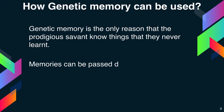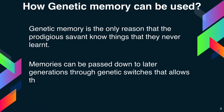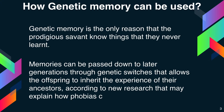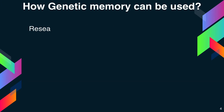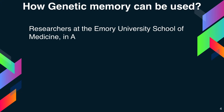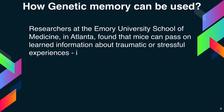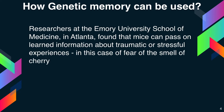Memories can be passed down to later generations through genetic switches that allow offspring to inherit the experiences of their ancestors, according to new research that may explain how phobias can develop. Researchers at Emory University School of Medicine in Atlanta found that mice can pass learned information about traumatic or stressful experiences — in this case, fear of the smell of cherry blossom — to subsequent generations.